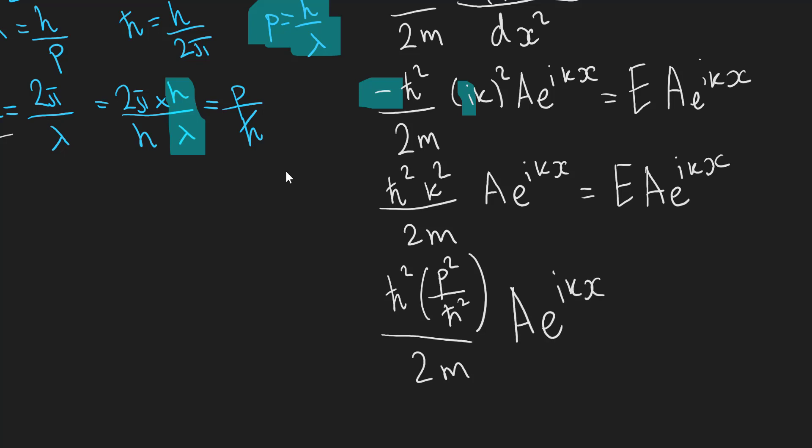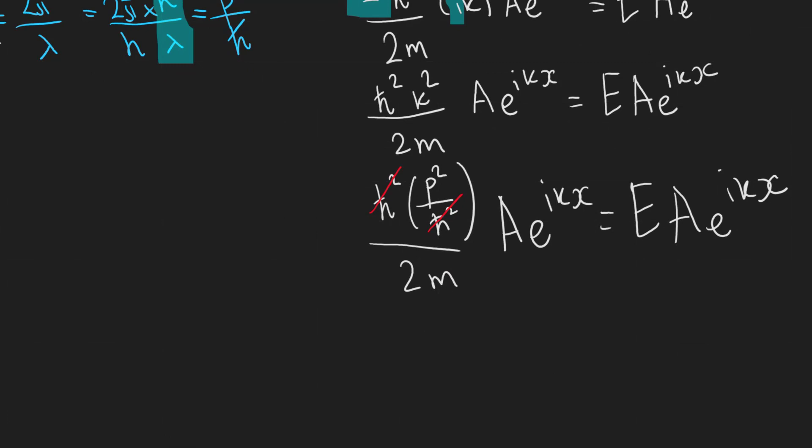Now the h bars can cancel out. So we can cancel this. And what we're left with is that p^2 over 2m multiplied by our proposed solution for the wave function, e^(ikx) with a constant of A in front is equal to E times A e^(ikx). Now what this means is exactly what we actually expected.